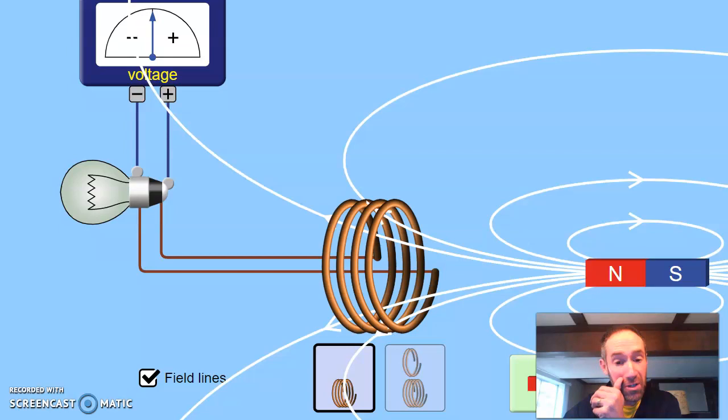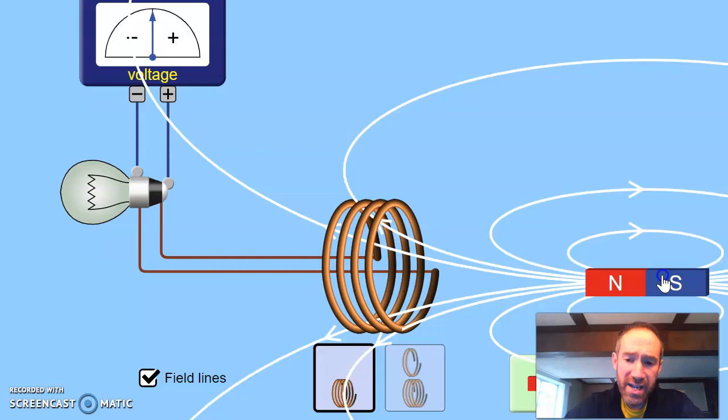If your imagination's not good, the programmers of this made it so that you could see the field lines, and now watch. Right now, I have four field lines going into the coil, but if I move it closer, I have eight. And if I move it farther away again, I have four.